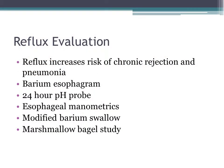An evaluation for reflux is an important component of your lung transplant evaluation. We know from previous studies that reflux and chronic acid aspiration results in chronic rejection and decreases the length of time in which your lungs will survive after a transplant. The reflux evaluation will involve a barium esophagram in which barium will be swallowed and your esophagus will be visualized under X-ray, and a 24-hour pH probe in which a small catheter will be placed above the opening to your stomach into your esophagus to determine whether acid reflux is present.